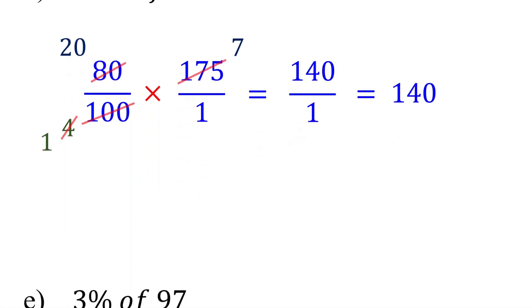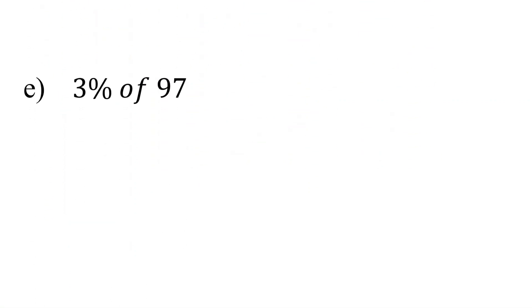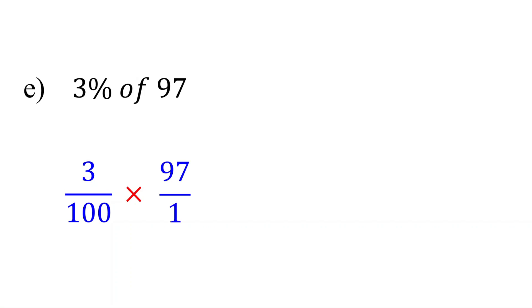Now let's work on some more challenging examples. 3% means 3 over 100. Of implies multiplication. 97 is the same as 97 over 1. Notice that both 3 and 97 do not have a common factor with 100. So we cannot simplify. In such cases, we multiply across first and then we divide.